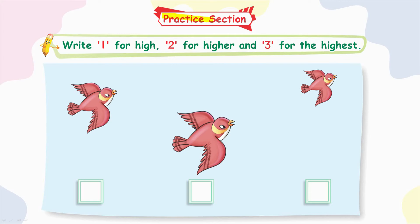Practice section. Write one for high, two for higher, and three for highest. Tell me which one is high. This one is high. Write one.